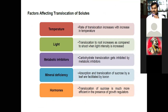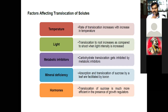As you know from the ascent of sap mechanism, the movement of solute is moved by means of transpiration. By transpiration, water moves mostly through the xylem. As temperature increases, the rate of transpiration also increases, and due to that the rate of translocation also increases with increasing temperature. So temperature is a factor responsible for translocation.